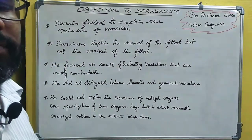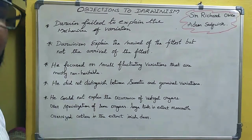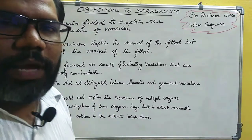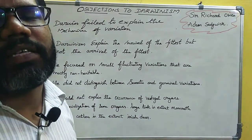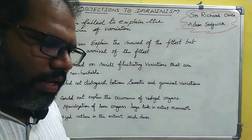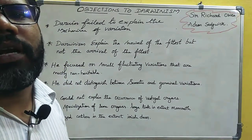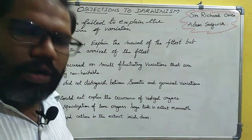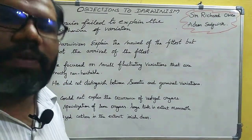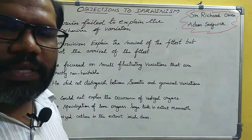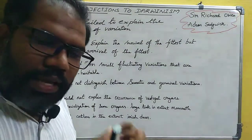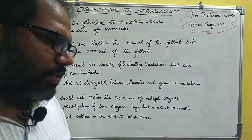Darwin explained the survival of the fittest but not the arrival of the fittest. For example, the giraffe is the survival of the fittest — during drought conditions when vegetation is lost, the giraffe was able to survive by modifying its forelegs and neck. But where does the first fit giraffe come from? That is the arrival of the fittest, which Darwin did not explain.